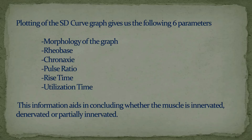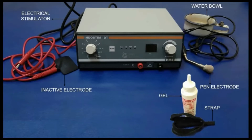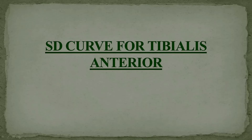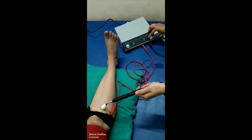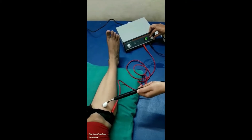These parameters aid in concluding whether the muscle is innervated, denervated, or partially innervated. Apparatus required for the SD curve procedure includes an electrical stimulator, inactive electrode, pan electrode, water bowl, gel, and straps. For the SD curve procedure for tibialis anterior: set the machine to IG mode with pulse duration of 300 ms and increase the intensity gradually until minimal muscle contraction is visible.